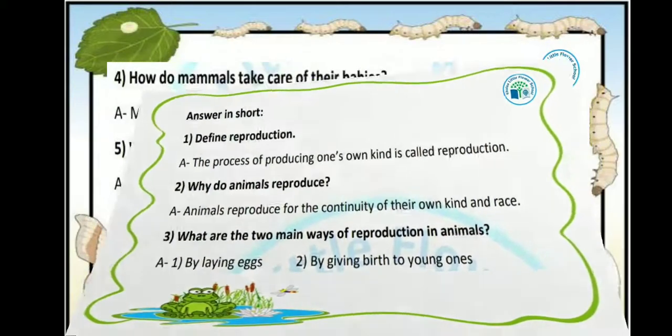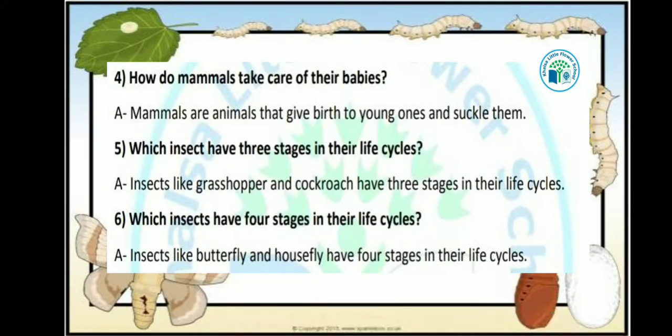Now kids, our next question is: how do animals take care of their babies? जो mammals होते हैं, वो किस तरह से अपने बच्चों का ध्यान रखते हैं? Mammals are animals that give birth to young ones and suckle them. Mammals जो हैं, वो अपने बच्चों को जन्म देते हैं, और उन्हें nourish भी करते हैं, उन्हें अपना दूध भी पिलाते हैं. तो इस तरह से mammals अपने बच्चों की care करते हैं.